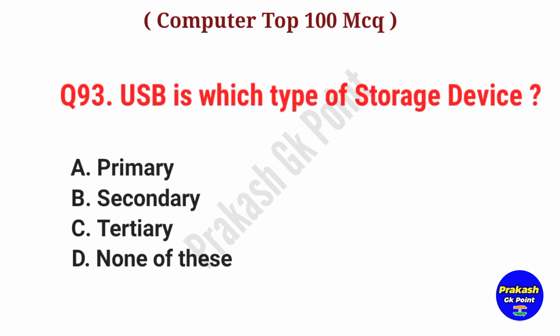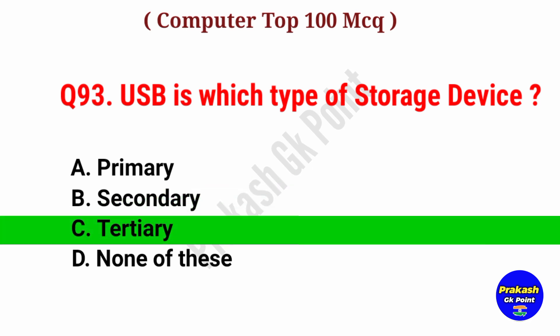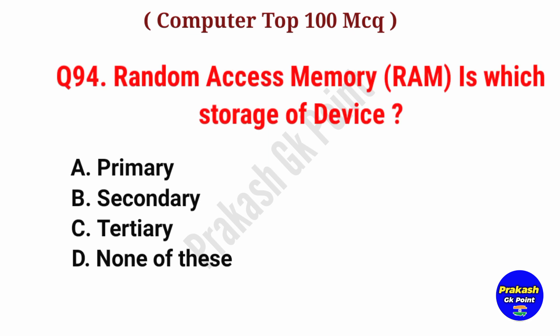USB is which type of storage device? Answer: Option C, Tertiary storage.